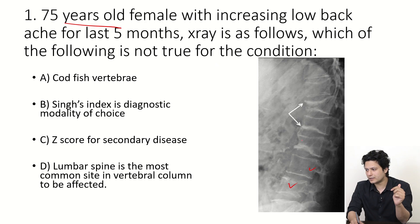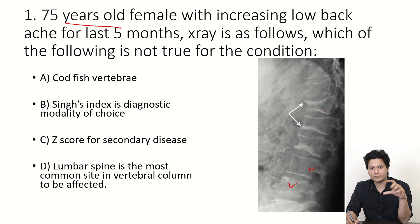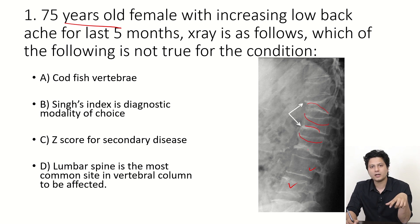Now the x-ray shows the vertebral bodies, and the key finding is that these vertebral bodies are wedged — they are collapsed in comparison to the vertebral bodies above and below.